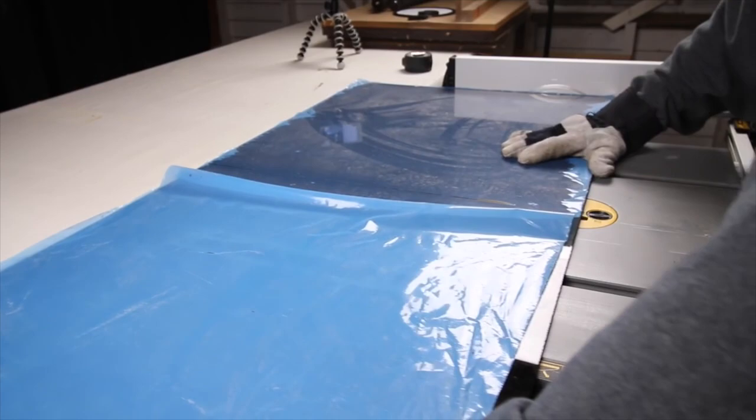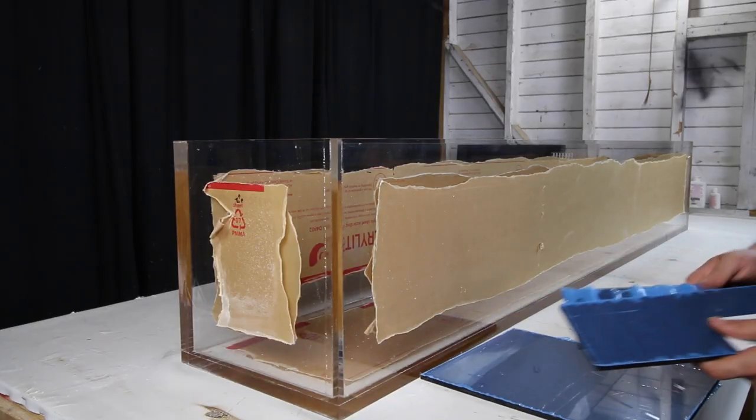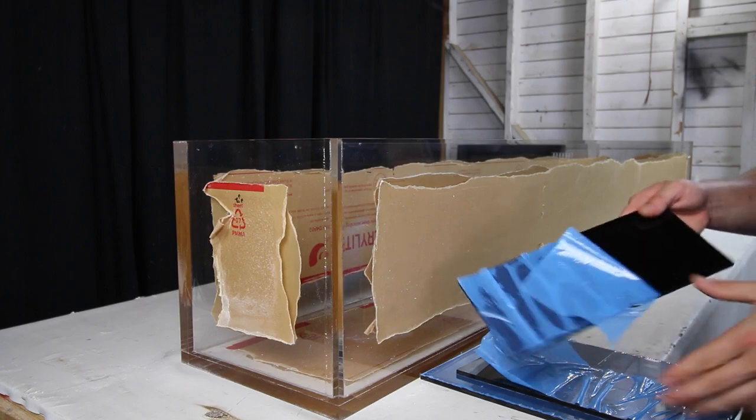But I didn't want a filter that would really take away from the aquascape because we will be scaping this tank and creating a bit of a biotope. So I wanted something that would blend into the tank and wouldn't take your attention. An all-in-one tank is the perfect solution for this. In order to build it, I went back to using some black acrylic that I had previously.